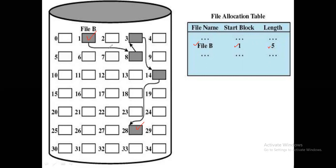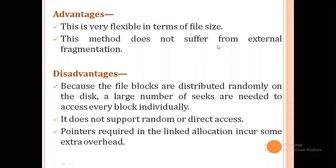Each pointer indicates where the next block is stored. The first block is at 1, the second block is stored at 8, the third block is stored at 3, the fourth block is stored at 14, and so on. This is known as the linked allocation method.